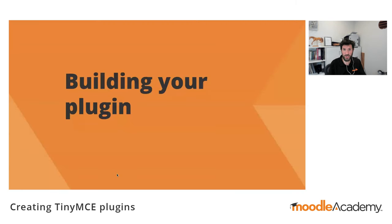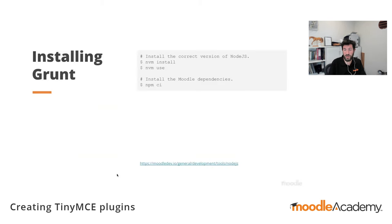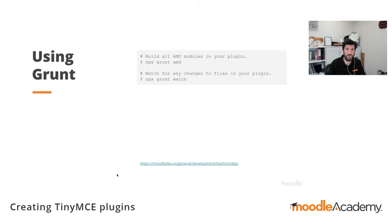As with most JavaScript projects, Moodle requires that plugin code be built — in our case transpiled — and we currently use Grunt for this. We recommend using the Node Version Manager to install the correct version of Node.js for each version of Moodle. After selecting the correct Node version, all of Moodle's JS dependencies can be installed using 'npm ci'. We then recommend using the npx tooling to run Grunt, and you can build all JS files using the 'npx grunt amd' command.